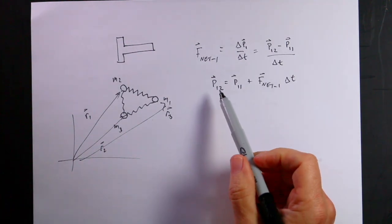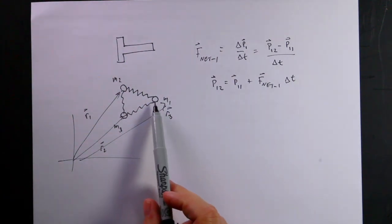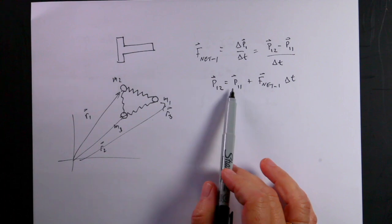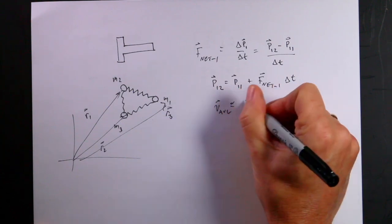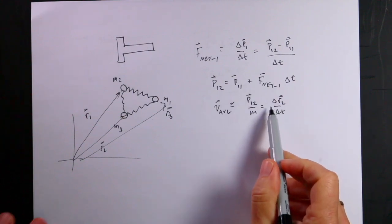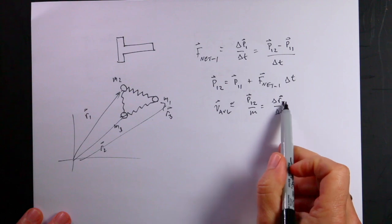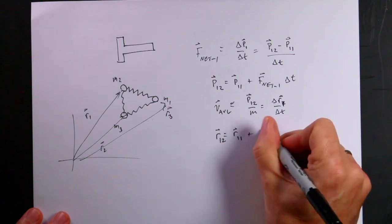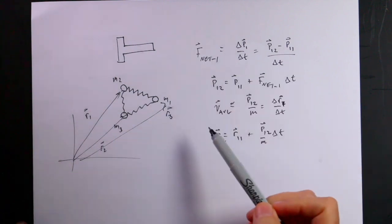If I break this into small time intervals and assume the net force is approximately constant over each interval, I can take the momentum at the beginning of the time interval and find the momentum at the end. Then I can use V_average ≈ P1,2 over M, which equals delta R over delta T, to find the new position. R1,2 equals R1,1 plus (P1,2 / M) times delta T. So if I can calculate the force, I can update the momentum, update the position, and repeat for each of the three masses.